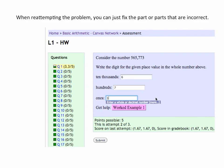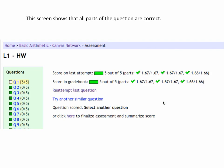When reattempting the problem, you can just fix the part or parts that are incorrect. Click Submit when finished. This screen shows that all parts of the question are now correct.